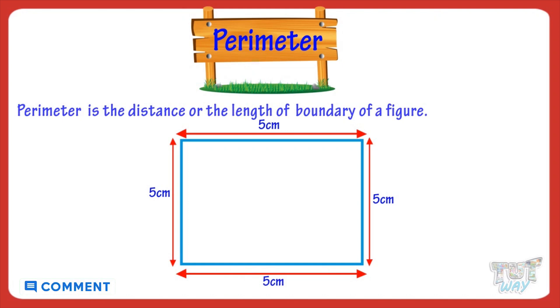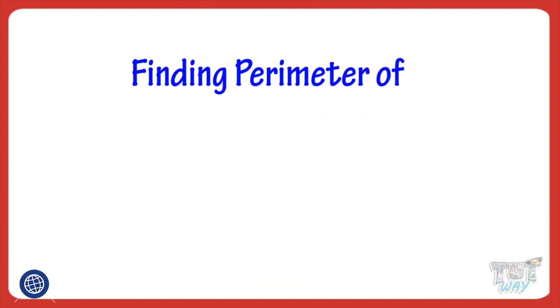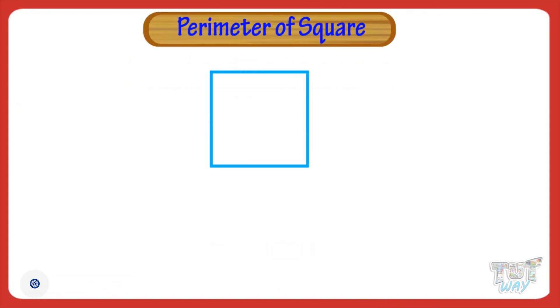Today we will learn finding the perimeter of a square. Here we have a square with its side given. Its side measures 5 cm.